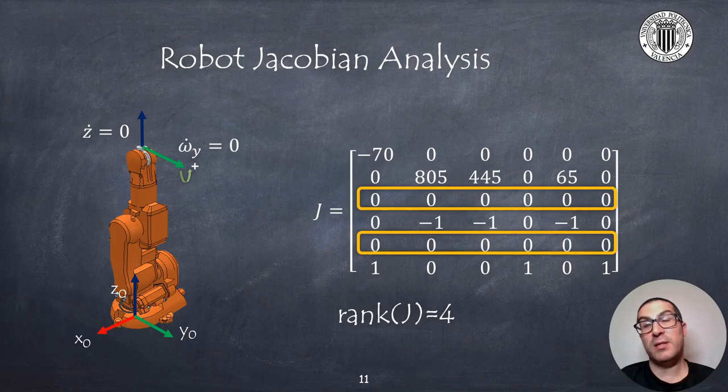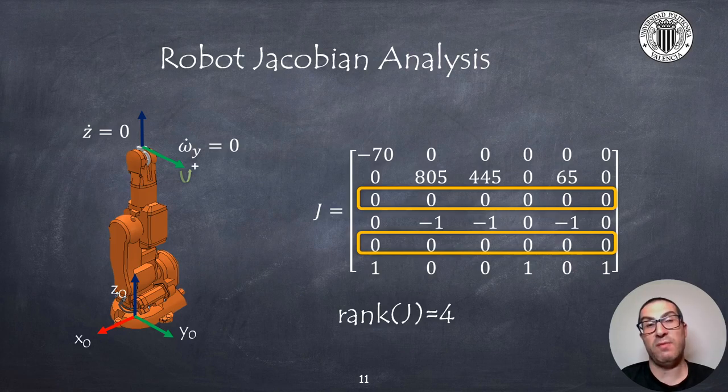This provides a hint that there are two directions that are not allowed. In many cases these directions are not that obvious as the one shown here, but anyway analyzing the rank of the Jacobian matrix is a clear indicator that it's important for us to know how many independent directions we can implement for a specific configuration.